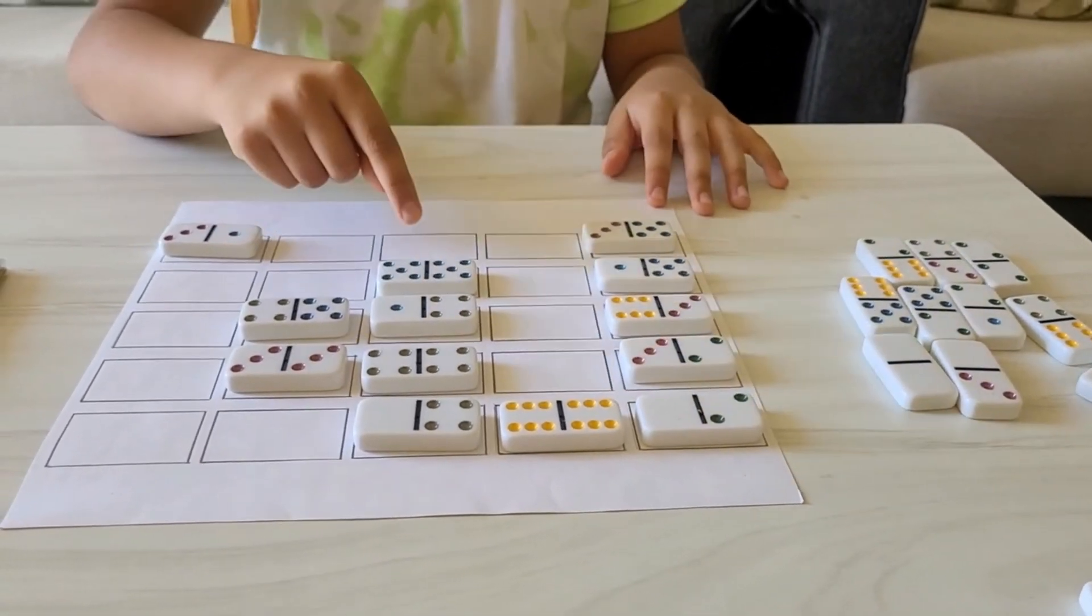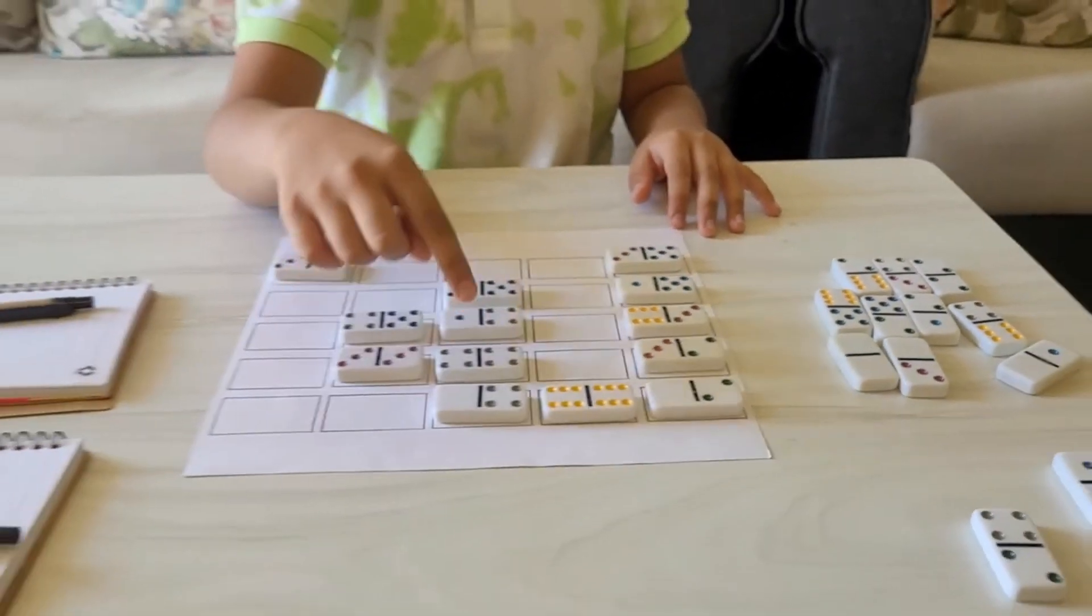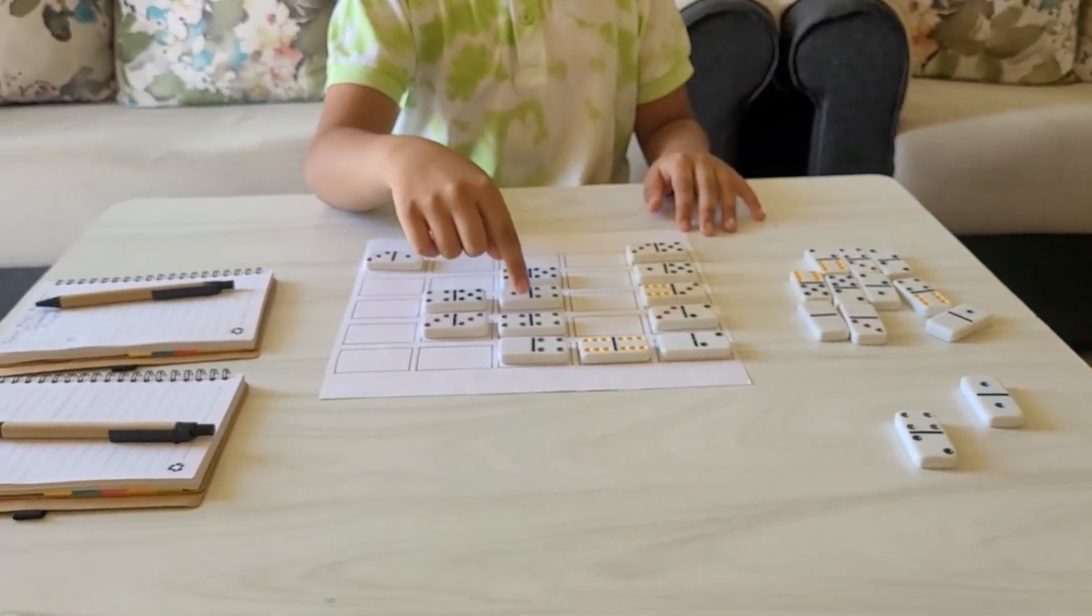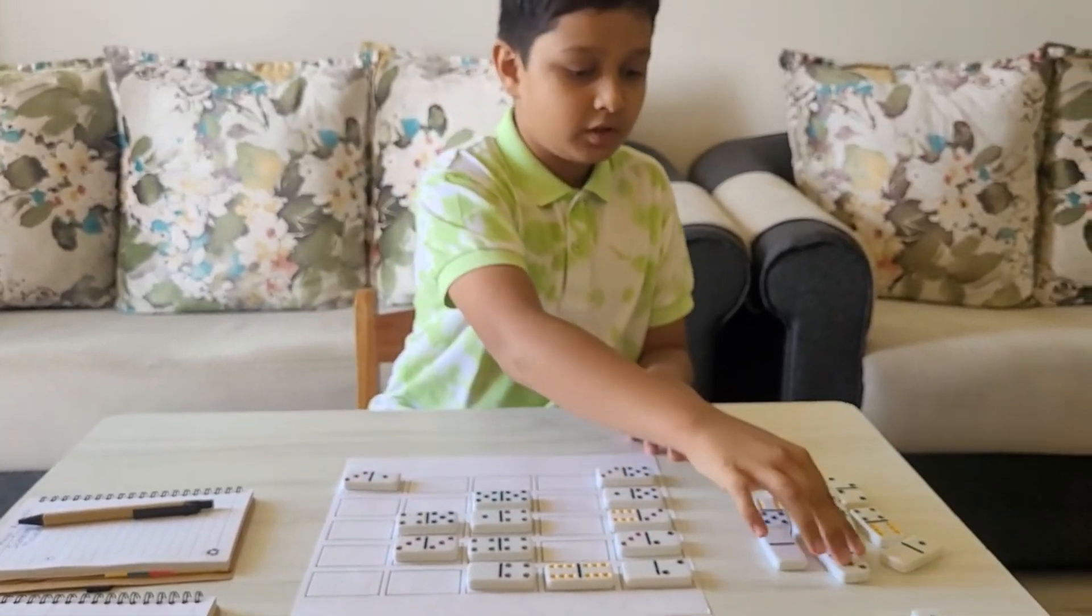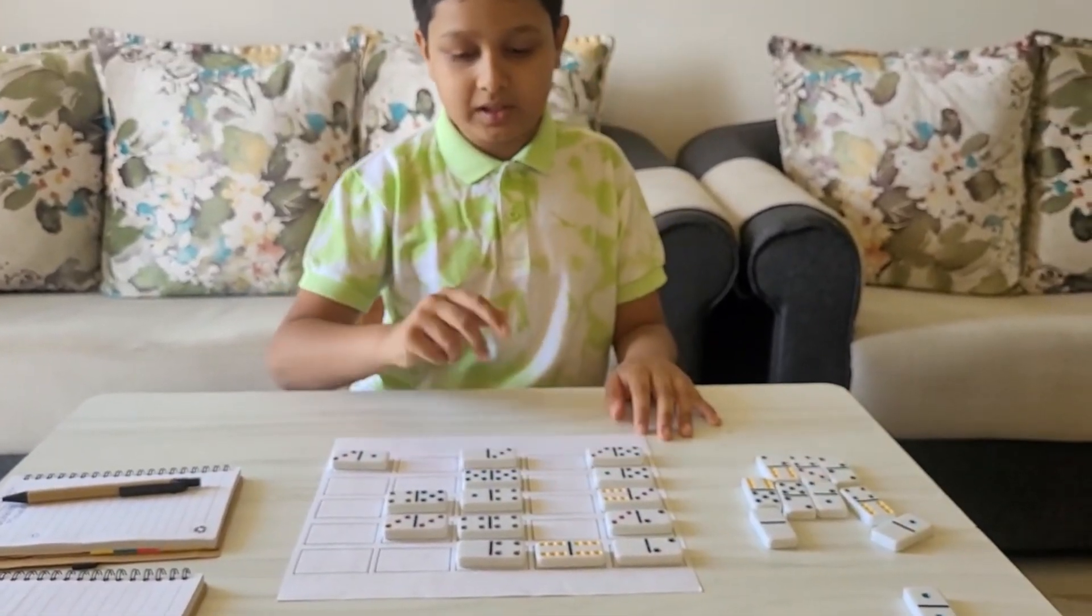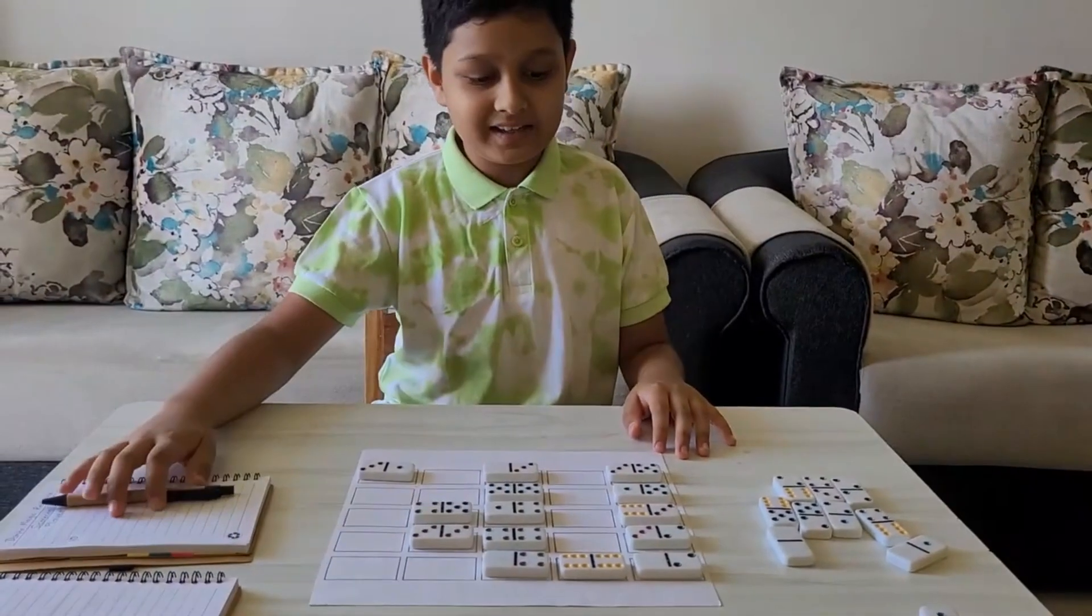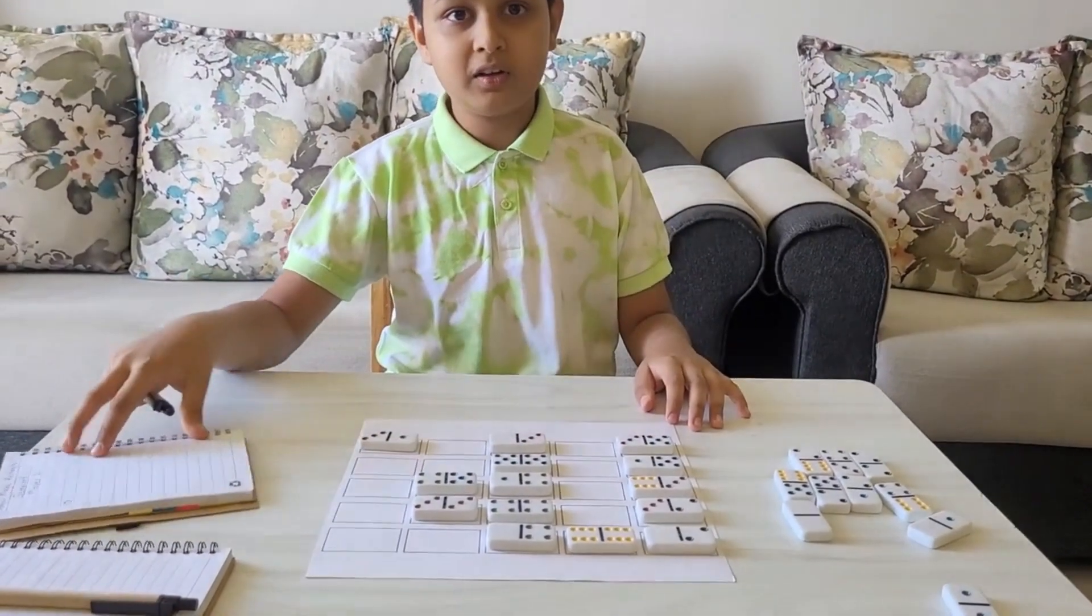Now let me look at this one. 4 plus 8 is 12, 12 plus 5 is 17, 17 plus 10 is 27. So I can place a 3 block over here and get 10 more points for this column.